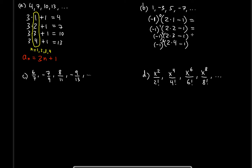Let's verify: negative one to the zero times (2×1 − 1) = 1 — positive one. Negative one to the first times (2×2 − 1) = negative three. Negative one squared times (2×3 − 1) = positive five. Negative one cubed times (2×4 − 1) = negative seven. So we definitely need negative one raised to a power.